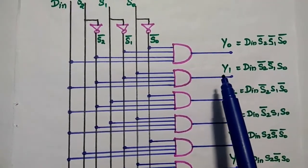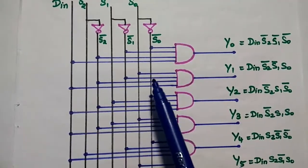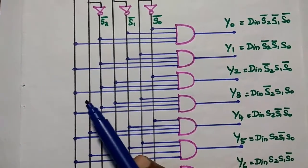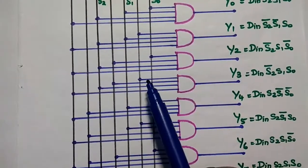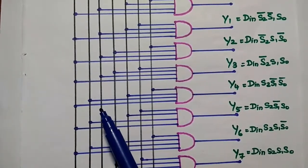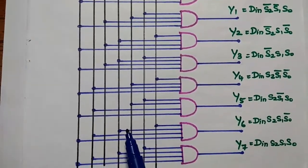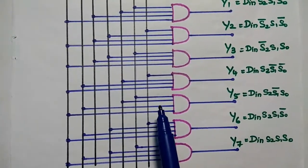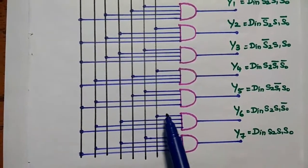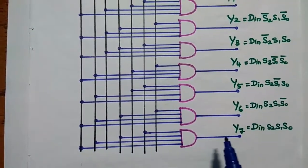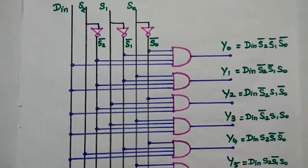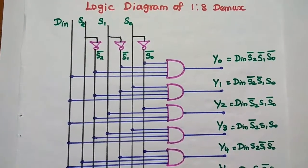Y1 is obtained as S2̄ · S1̄ · S0 · DIN. Y2 is S2̄ · S1 · S0̄ · DIN. Y3 is S2̄ · S1 · S0 · DIN. Y4 is DIN · S2 · S1̄ · S0̄. Y5 is DIN · S2 · S1̄ · S0. Y6 is DIN · S2 · S1 · S0̄. Finally, Y7 is DIN · S2 · S1 · S0. This completes the logic diagram of the 1-to-8 demux circuit.